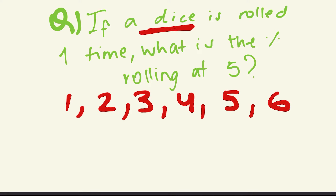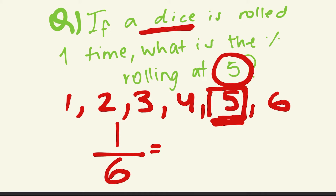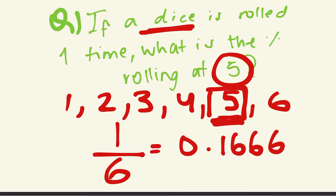If I roll it one time, what is the percent chance I get five? The denominator will be how many outcomes there can be — six outcomes. We're seeing how many times we can get five out of those six outcomes, so it's one out of six. You divide one by six and get 0.1666.